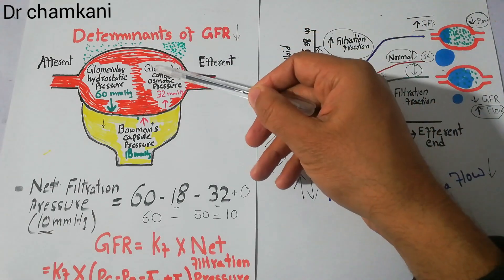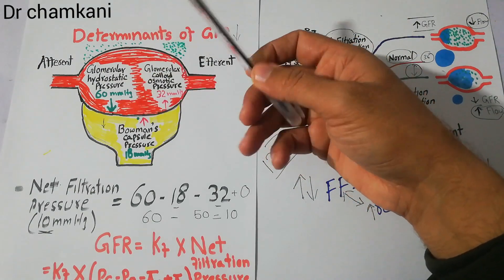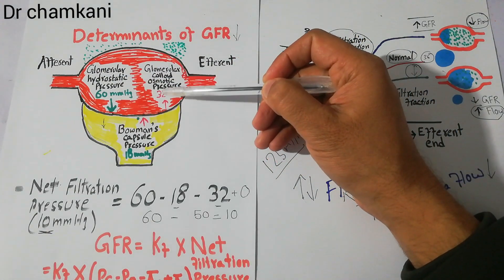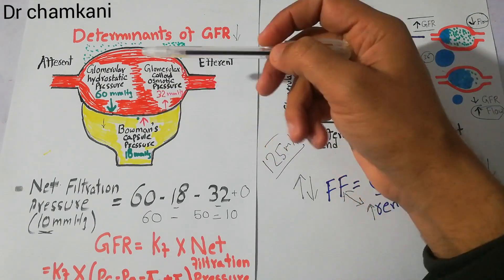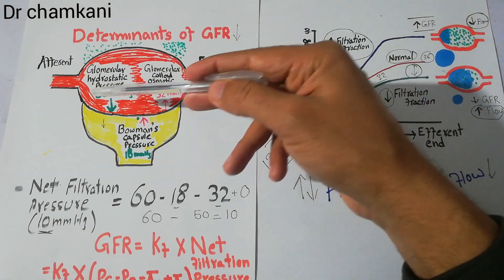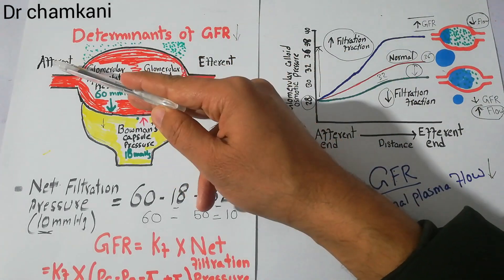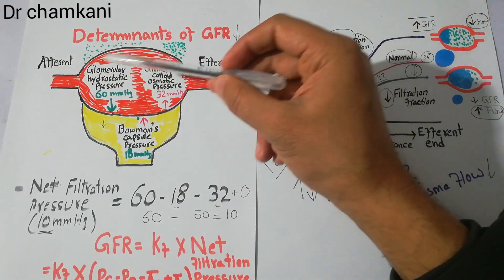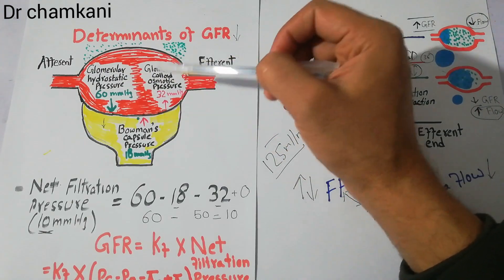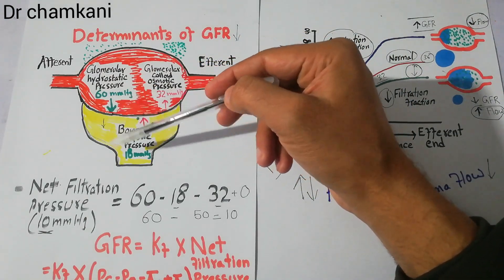Glomerular colloid osmotic pressure is basically a force which opposes the filtration process. It is generated due to the presence of proteins in plasma. The plasma entering the glomerular capillaries through the afferent arteriole contains proteins, and those proteins generate this pressure. It is a negative pressure as compared to glomerular hydrostatic pressure, which favors filtration.